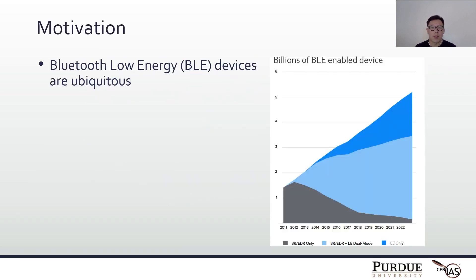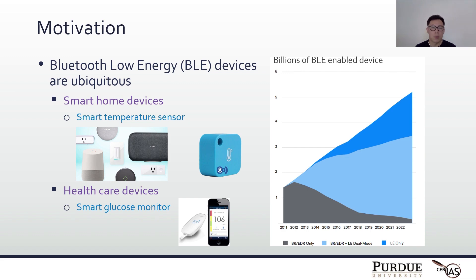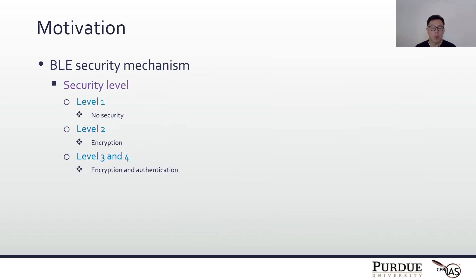BLE was introduced in 2011. It's mainly designed for power-constrained devices, such as smart home devices — for example, a smart temperature sensor — and healthcare devices, like a smart glucose monitor. The number of BLE devices grows rapidly in recent years. According to Bluetooth SIG, there will be over 5 billion BLE devices shipped in 2023. Given the popularity of BLE devices, the security of BLE is important.